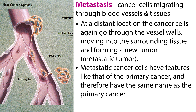Metastatic cancer cells have features like that of the primary cancer, and therefore have the same name as the primary cancer. For example, breast cancer that spreads to the brain is called metastatic breast cancer, not brain cancer.